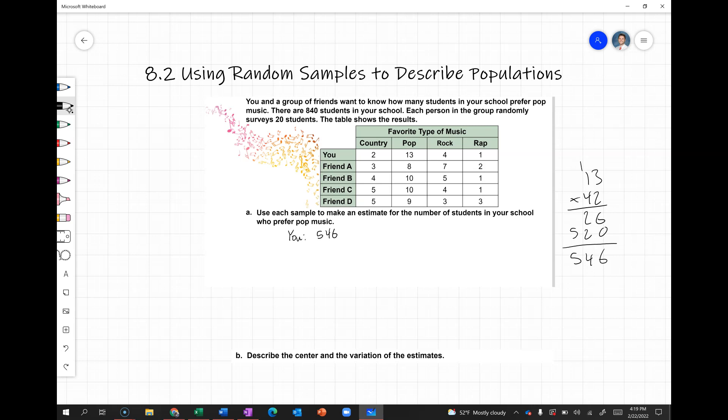For friend A, we had 8 over 20, and again we want that to be equivalent to how many over 840. So we'll take 8 and multiply by 42. We get 336.